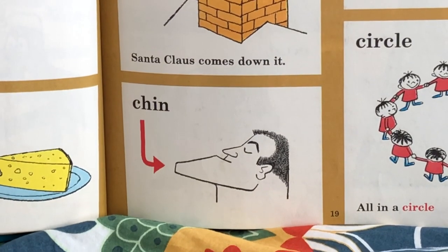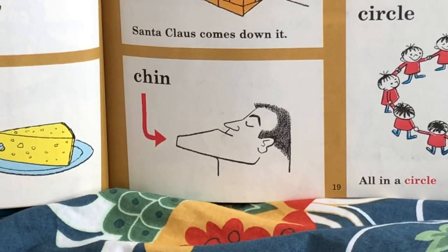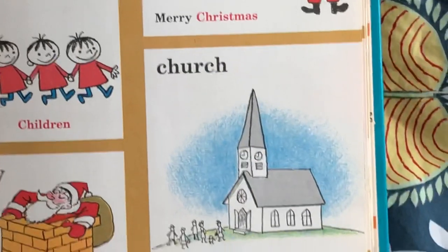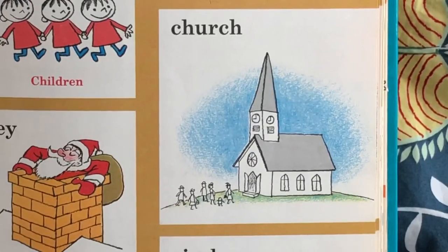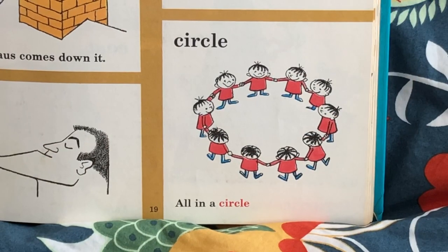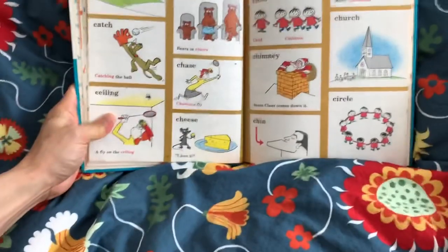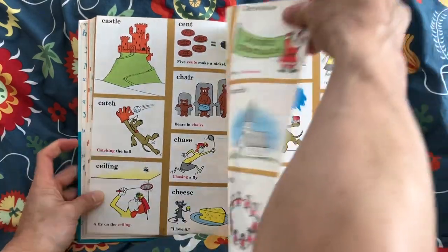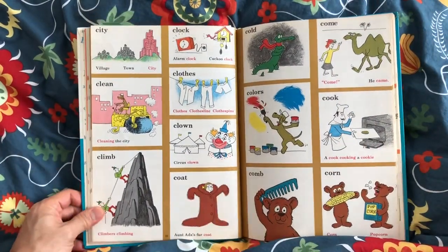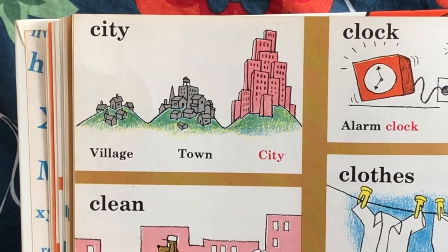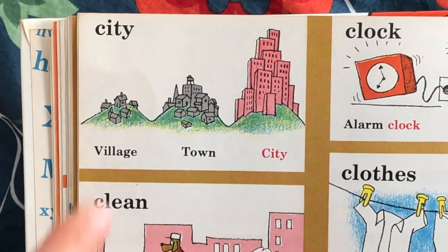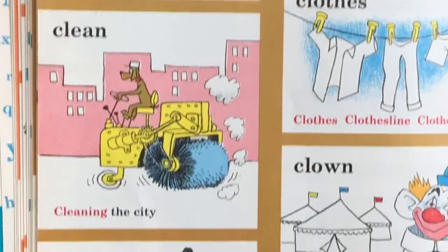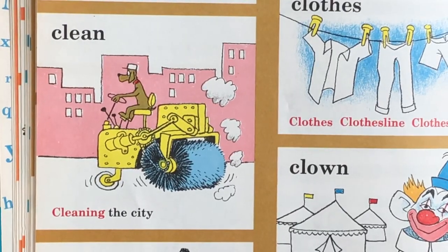Chin — that's a pretty big chin. Christmas — Merry Christmas. Church. Circle — all in a circle. Let's turn the page, see what's next in the letter C. City. Village. Town. City. Clean — cleaning the city.